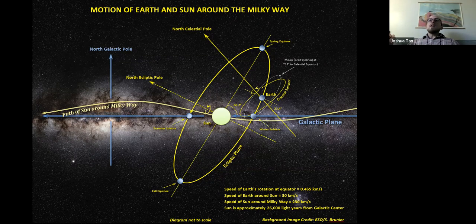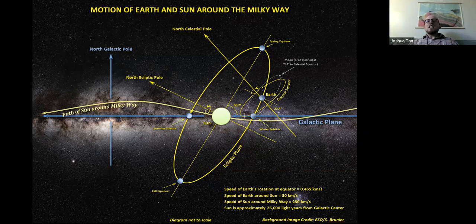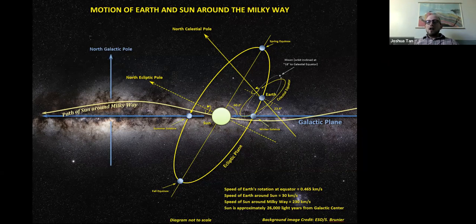Month by month, we have a satellite — the moon — that orbits the earth in a plane that is similar but not the same as the plane the earth moves around the sun in, and that's illustrated as well. The moon's orbit and the ecliptical plane are very similar, and you can see those two ellipses are fairly close to aligned with each other.